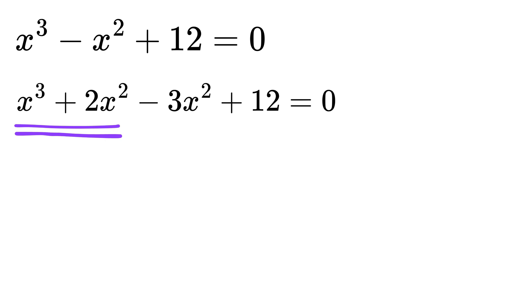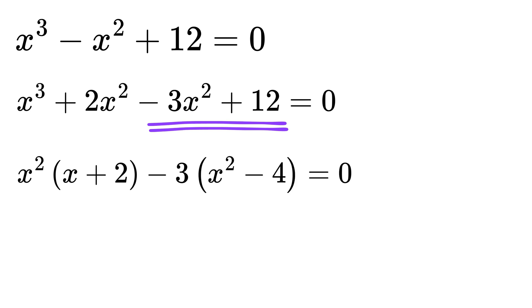Now, take x squared as common from this to get x squared times x plus 2, and from the next part, take minus 3 as common to get minus 3 times x squared minus 4.